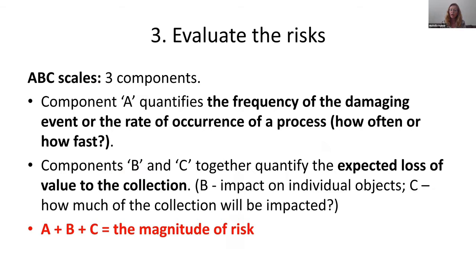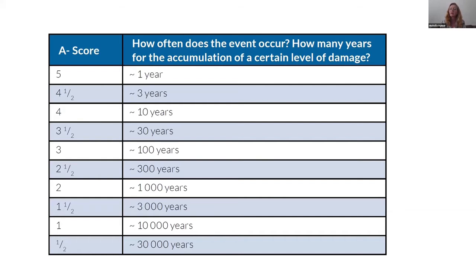To evaluate the risks, you have to do a calculation — done in a very scientific way. You have an A, B, and C score, and you total them up to get your magnitude of risk. Component A is the frequency or rate of occurrence — how often or how fast. B is the impact on individual objects. C is how much of the collection will be impacted. For the A score, a score of five means it will happen every year. A score of three and a half means within 30 years — still quite a high score because we see these collections as needing to survive for a very long time.